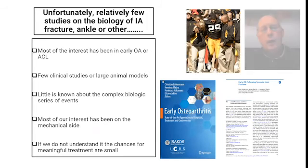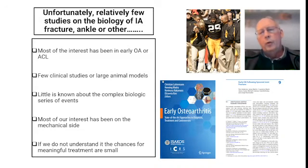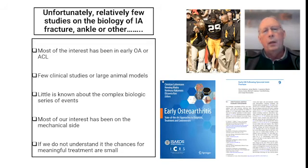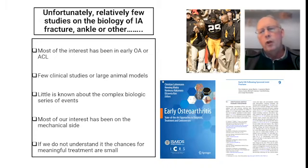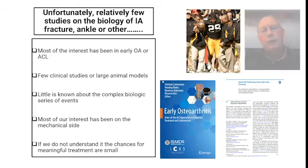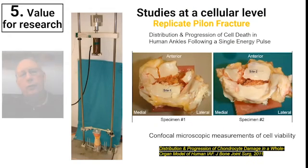Unfortunately, we are just really at the beginning of being able to have those candidate interventions in fracture patients. Most of the interest in early osteoarthritis has been in ACL. There are few large animal models or clinical studies, and relatively little is known about the complex biological series of events. Most of our interest over the decades has been on the mechanical side and not on the biological side — and you have to understand the mechanical side because it clearly has an effect, but the future is in the biological side.